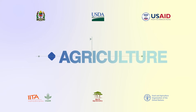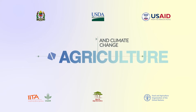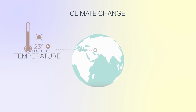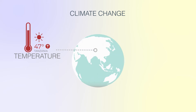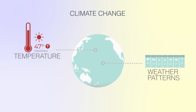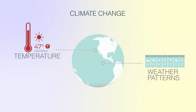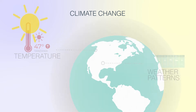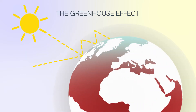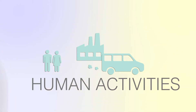Agriculture and climate change. The earth's average temperature is increasing, causing changes in weather patterns over a given period. This global warming is caused by an increase in greenhouse gases due to human activities.